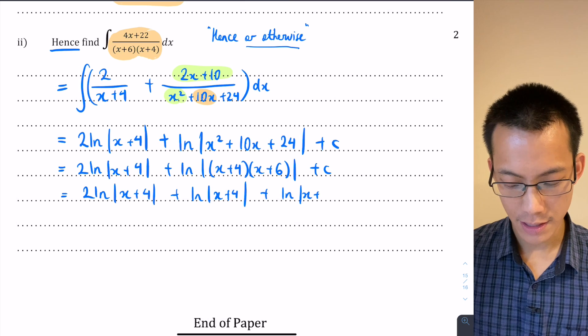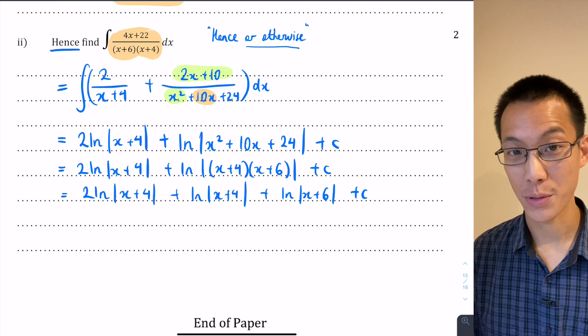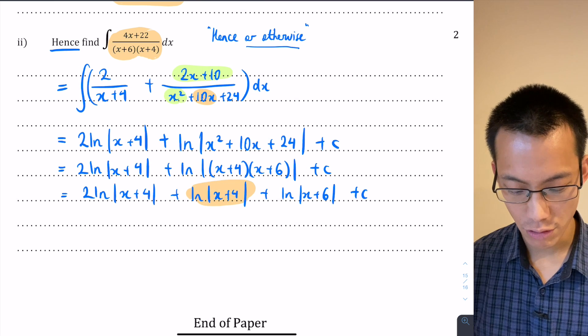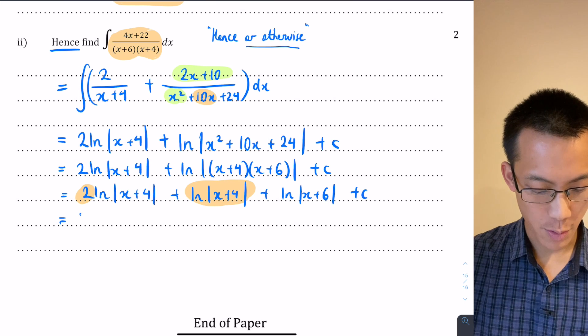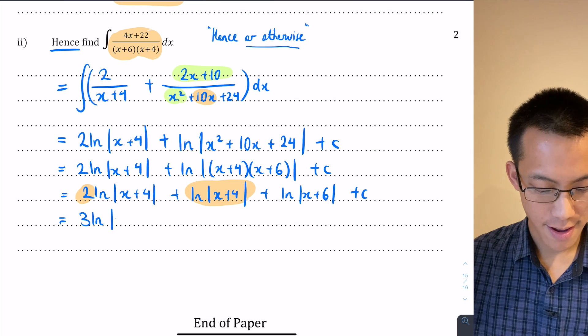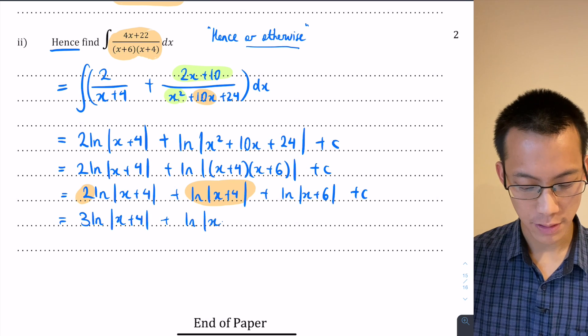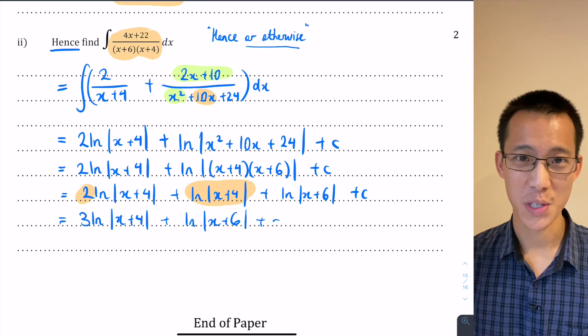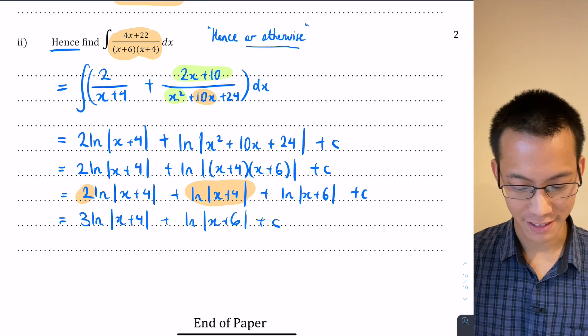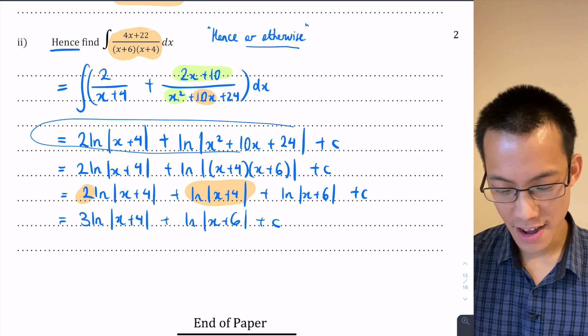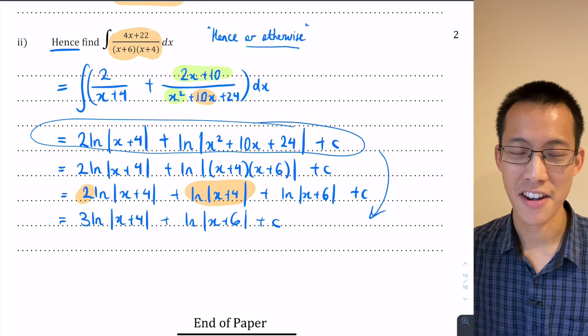So that leaves me with 3 ln|x+4| plus ln|x+6| plus my constant of integration, and you're finally done. Though it is worth saying, you know, by the by, this point here, you have done the integration and all this stuff underneath is just making it nice and neat.